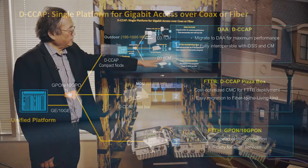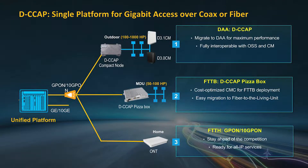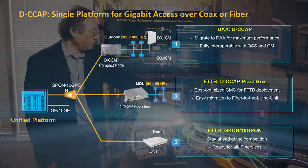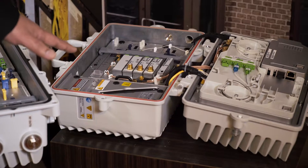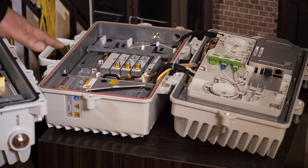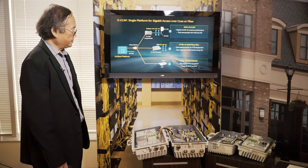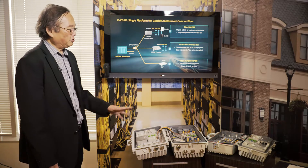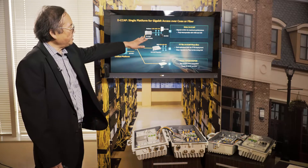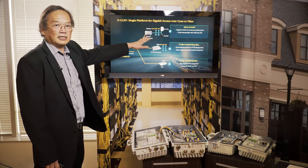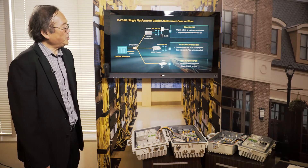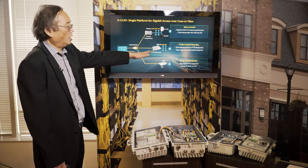I want to talk about the second use case: MDUs, or multi-dwelling units. These are typically apartments, student housing, or dormitories. This smaller unit is designed to support anywhere from 50 to 100 homes passed — the number of living units you typically see in apartment buildings. These are two different form factors with different powering requirements: HFC nodes use coax line power at 60 or 90 volts, while MDUs are installed indoors with 110 volts.